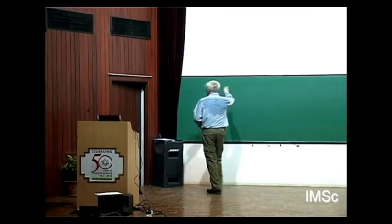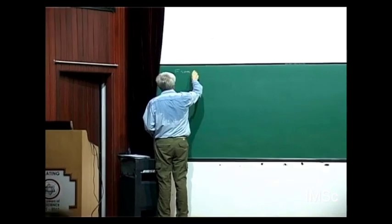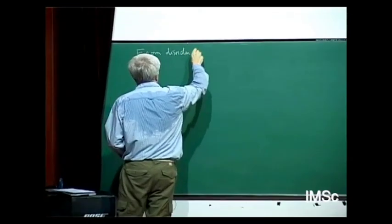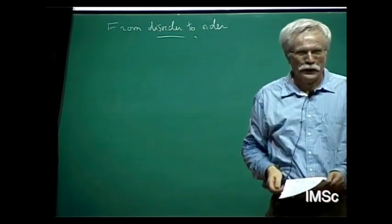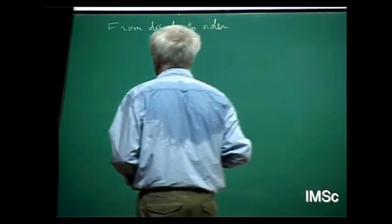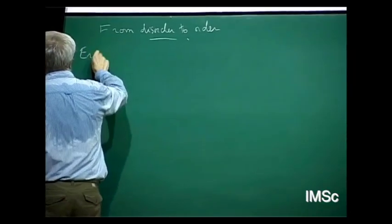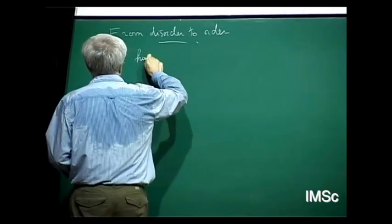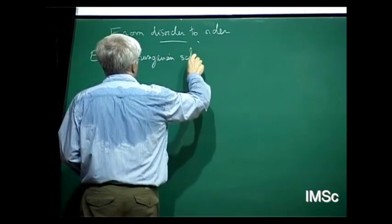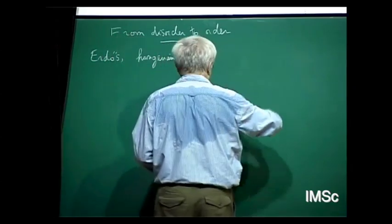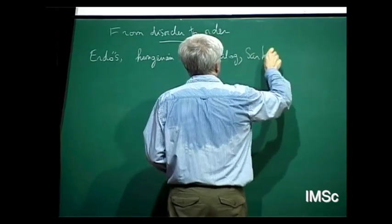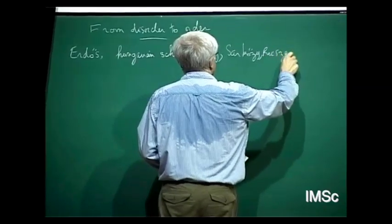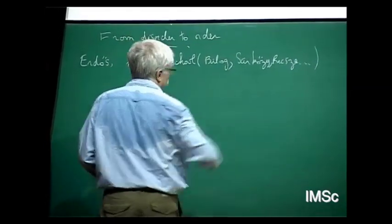About the talk — the subject is what I call a general philosophy: from disorder to order. Maybe Ram, it will be the title of his next book of philosophy. I am thinking of people like Erdős, and what I would like to call the Hungarian school — people like Balog, Sarkozy, Rúja, and you can add many, many names.